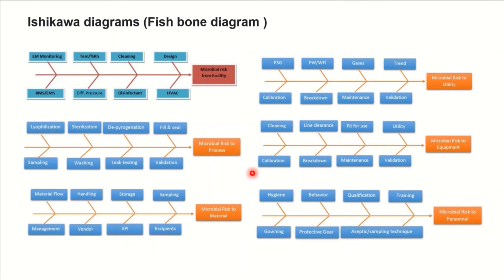Validation, maintenance, breakdown, and calibration are common contributing factors for utility, equipment, and other critical machinery. For equipment, it should be fit for use and the design should not be compromised — for example, if a person cannot reach certain areas of a large vessel because there is no ladder, that is a health hazard for personnel and a potential cause of microbial contamination.